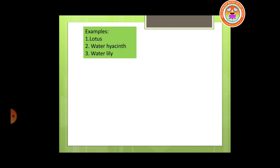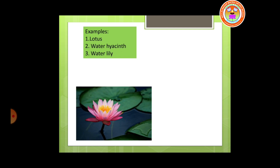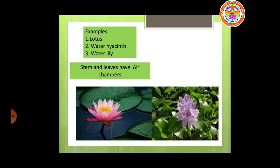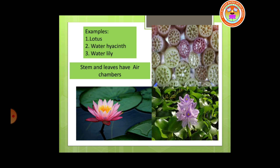Examples of freshwater habitat organisms include water plants such as lotus, water hyacinth and water lily. These aquatic plants are provided with special adaptations called air chambers. You can see in the stem of the lotus they have many air chambers which help the plant to float. That is why water plants normally float, and some plants may be submerged but are still provided with air chambers.